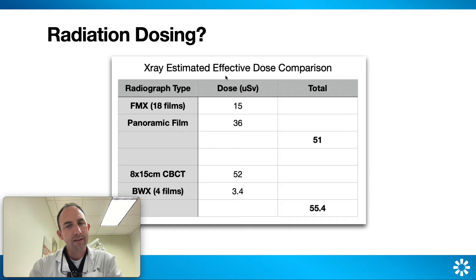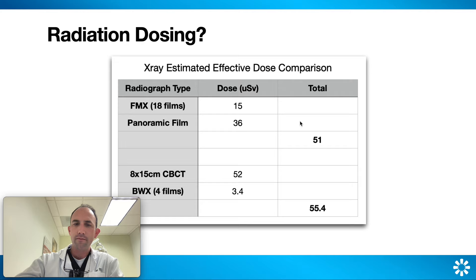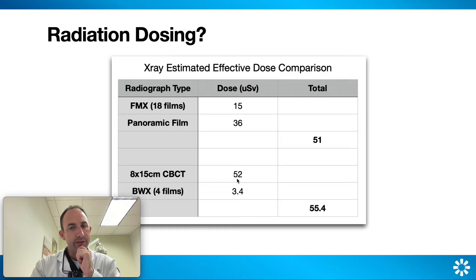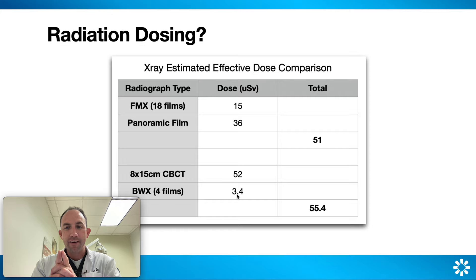An FMX is roughly 15 microsieverts — that's effective dose, not actual absorbed dose, which could be different. A panoramic film is roughly — this is for a Kodak machine if I remember right. Our 8x15, which is the biggest field of view our machine can capture, is 52 microsieverts on standard, plus four bitewing films. If you're taking anterior PAs, you also have to add that to the list, because it's important that we're precise here.